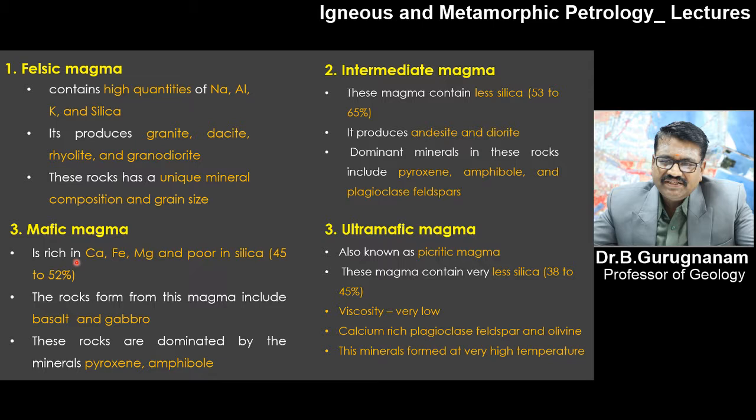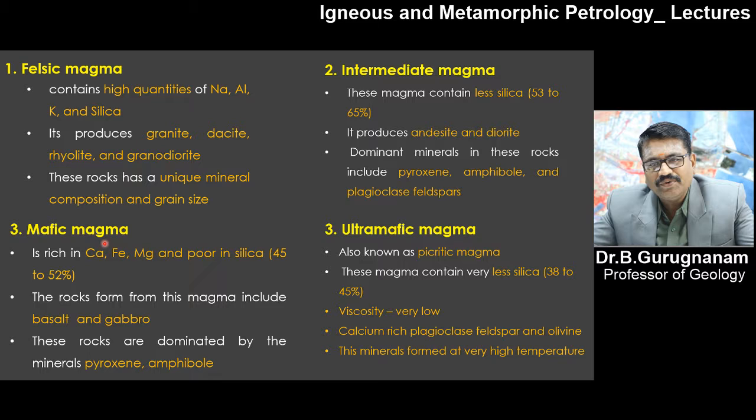Mafic magma is rich in calcium, iron, and magnesium, and poor in silica. The percentage of silica starts between 45 to 50%, and here it is less — 38 to 45% silica. The rocks from this magma include basalt and gabbro as the major end components of mafic magma.